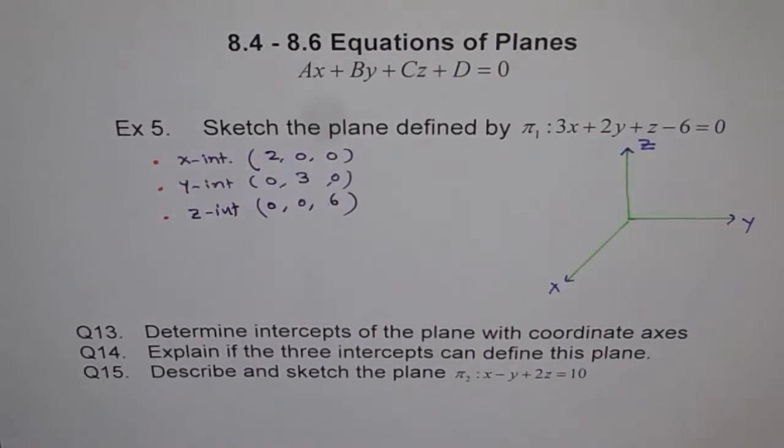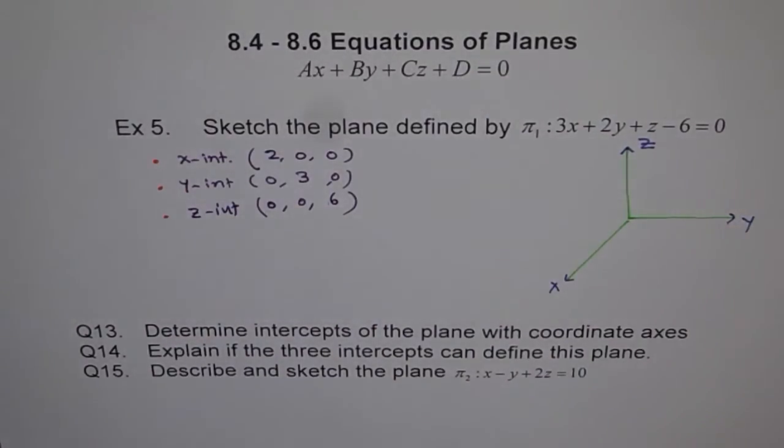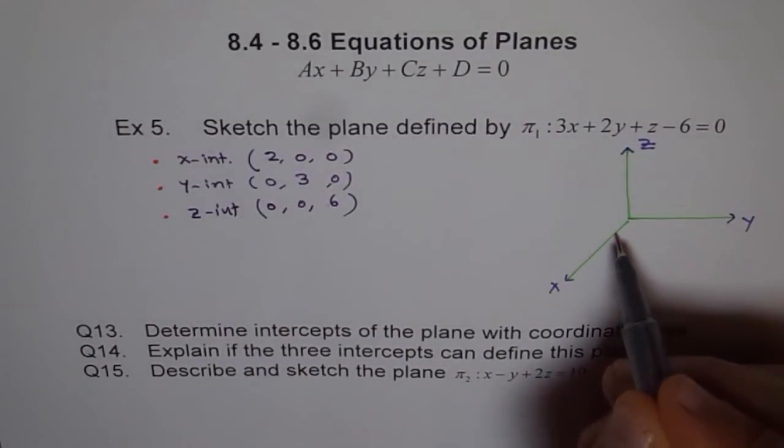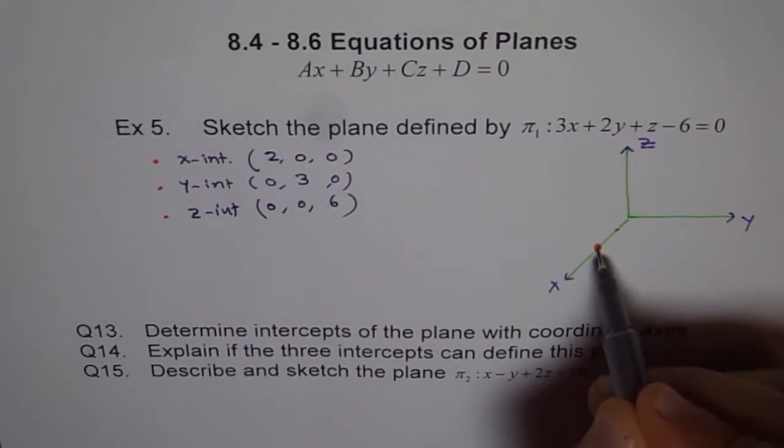Good job. So, we got 3 intercepts. So, to sketch a plane, we just need 3 points. And since we have 3 intercepts, we have 3 points. So, let's draw these points. First is 2, 0, 0. So, let's say this is 1 and so this is 2, 0, 0.